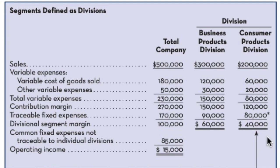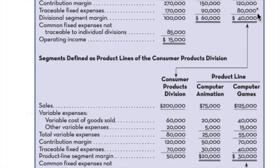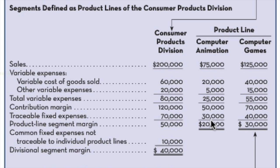To demonstrate how it can be broken down even further, we've taken the consumer products division and broken it down into two other segments by product line: computer animation and computer games. We go through the same process — sales less variable expenses give contribution margin, then traceable fixed expenses. When we were at the higher level, we were able to trace $80,000 of fixed expenses to the consumer products division. However, once we get down to the segments within that division, we can only trace $70,000 to specific segments — $30,000 to computer animation and $40,000 to computer games — meaning $10,000 of the $80,000 is common just to the existence of the consumer products division.